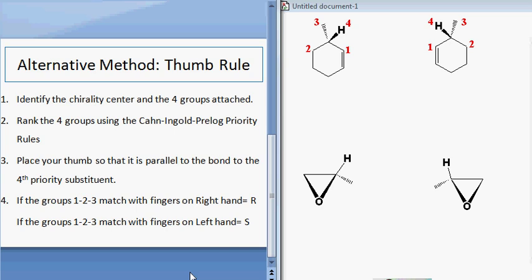Imagine your first knuckle with the number one on it, your second knuckle with a number two on it, and the third knuckle with a number three on it.